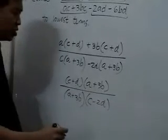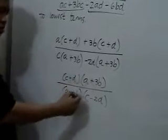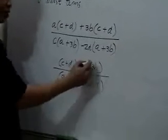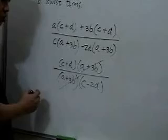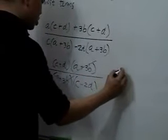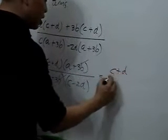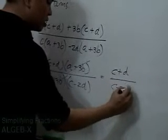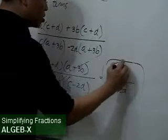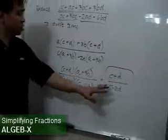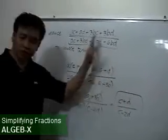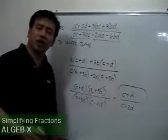And you can see here that A plus 3B is common to both the numerator and the denominator, so we can cancel these two terms out. Leaving us with C plus D in the numerator, and C minus 2D in the denominator. So this is the equivalent fraction, but in lowest terms.